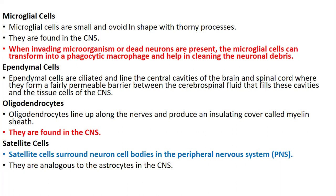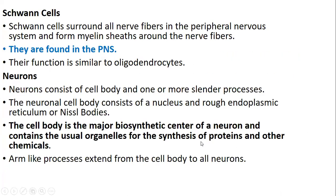In the peripheral nervous system, there are two types of neuroglia: satellite cells, which surround the neuron cell bodies—similar to astrocytes in the central nervous system—and Schwann cells, which surround all nerve fibers in the peripheral nervous system and form a myelin sheath around them, functioning similarly to oligodendrocytes. Neurons consist of the cell body and processes. The neuronal cell bodies consist of the nucleus and rough endoplasmic reticulum, also known as the Nissl body.